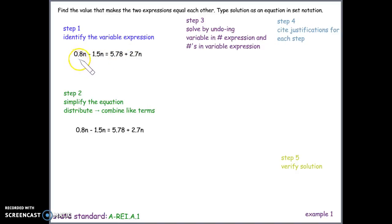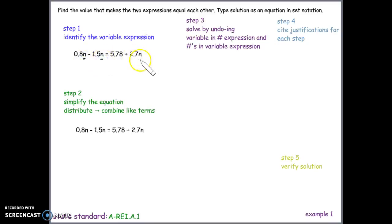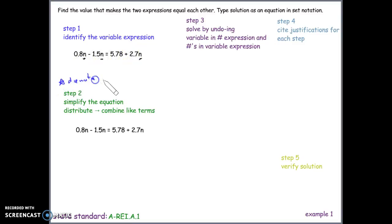Looking at the equation, on the left side we have 0.8n minus 1.5n, and on the right side we have 5.78 plus 2.7n. We have variables on both sides, so our first step is to decide which side will be our variable expression and which side will be our number expression.